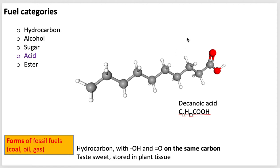If a hydrocarbon has a carbon double-bonded to an oxygen and that same carbon also has an OH, then it gets a different name — it's called an acid, or carboxylic acid. One way of writing the formula is COOH for that part. If you count all the carbons and hydrogens across the rest of the chain, there are 10 carbons and 19 hydrogens, so that's decanoic acid.